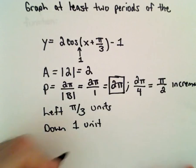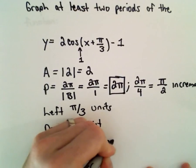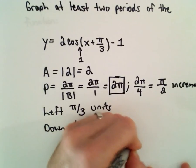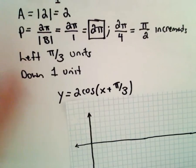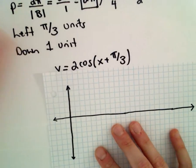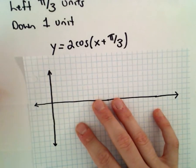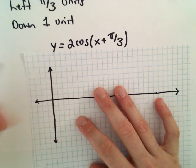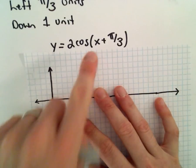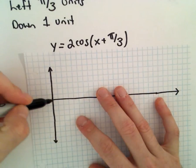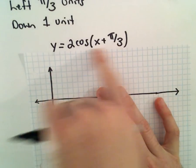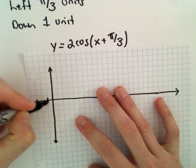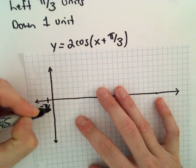What I'm going to do is first graph y equals 2 times cosine of x plus pi over 3, and then just move everything down 1 unit. Because otherwise it may get a little nasty. So at cosine of 0, you're normally at positive 1. In this case, though, it's been shifted to the left pi over 3 units, so I'm going to make that negative pi over 3.